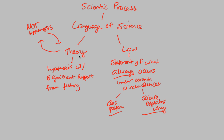To summarize: a hypothesis does not mean theory, and a theory is not a hypothesis. A theory is a hypothesis, but with significant support from testing. And a law is a statement of what always occurs under certain circumstances. Think of the law of gravity — if you drop something from a certain height, it will fall. That will happen over and over again. Science explains why, through many different physical components. Most importantly, it's an observable pattern that repeats the same results over and over again. That's a law.